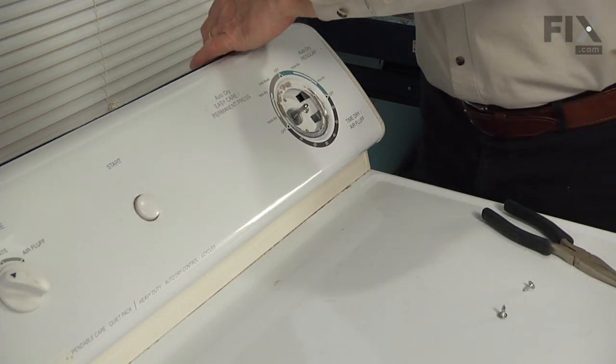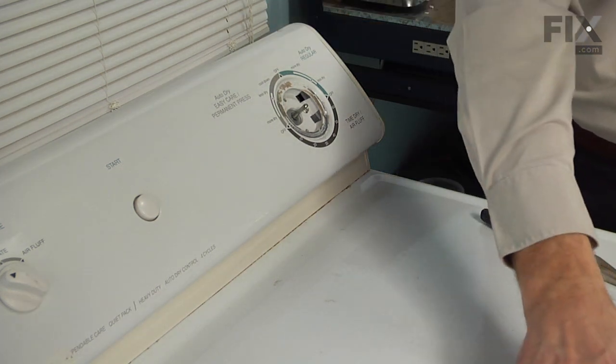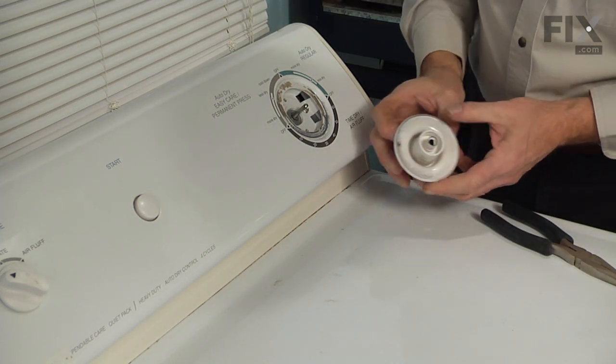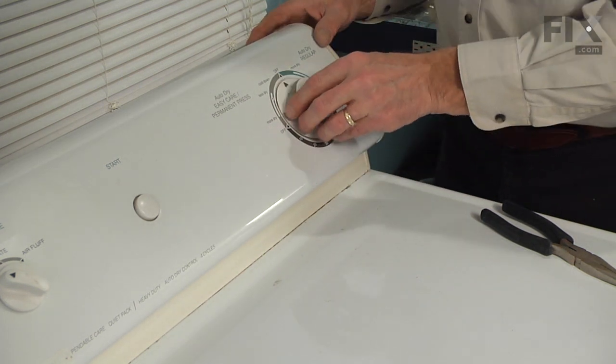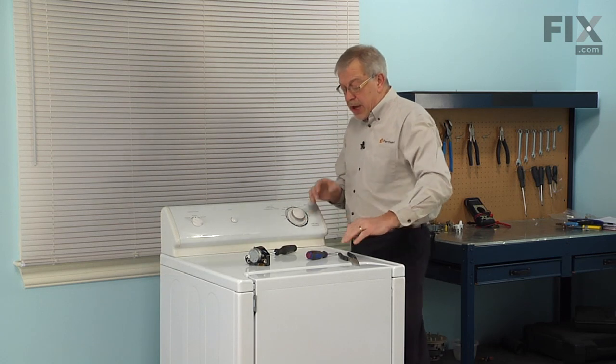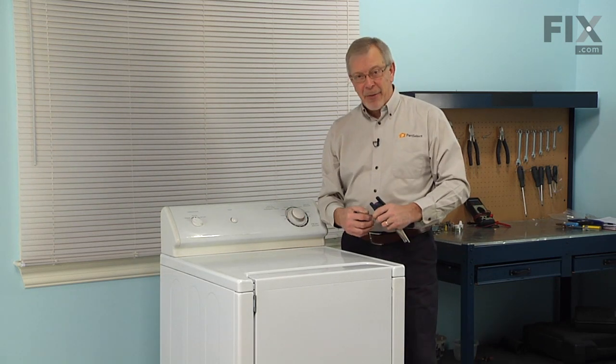We'll install the three screws across the top and then reinstall the knob, just make sure that the metal insert is still in the knob. Push it firmly onto the shaft. We're now ready to reconnect the power and our repair is complete.